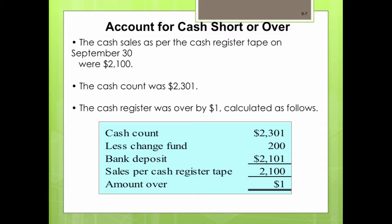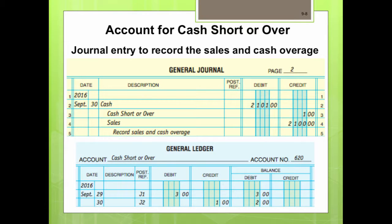Here's an example of how to calculate cash over at the end of the day. For the same company on September 30th, the change fund was still $200, and cash sales amounted to $2,100, so you should expect $2,300 in the register at close. However, the cash count came to $2,301, meaning the cash was over by $1.